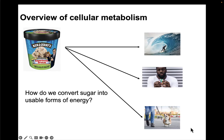In this video, we're going to start talking about the process of cellular metabolism. The question we're going to try to answer is: how do we convert sugar into usable forms of energy? As my representation of sugar, I've chosen my favorite ice cream, Ben and Jerry's Americone Dream. What I want to introduce you to is how do we get from what we eat to what we do — whether it's surfing, solving a puzzle, or taking a dog for a walk. So how do we get from point A to point B?